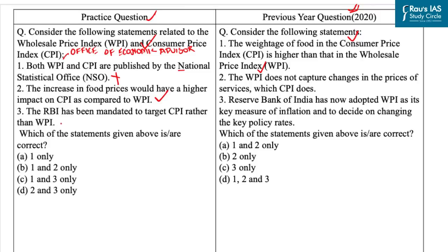The third statement is: RBI has been mandated to target CPI rather than WPI. This statement is correct, because according to an RBI notification, the inflation rate will be based on the final combined Consumer Price Index, which will be used as a reference CPI with a lag of three months. For example, the final combined CPI for September 2022 will be used as the reference CPI for the whole of December 2022.